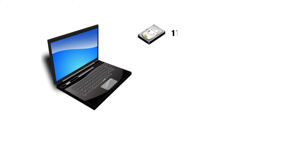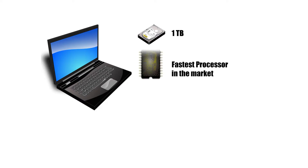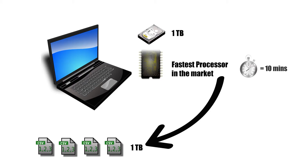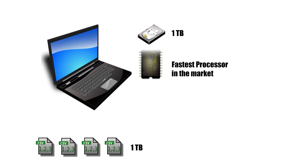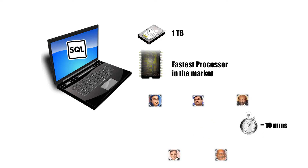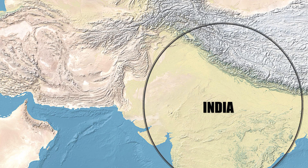To get this detail out of the data, we have a laptop with one terabyte of hard disk and the fastest processor available in the market. This fastest processor has a record that it can process one terabyte in 10 minutes — no more than one terabyte in 10 minutes. Since our data is one terabyte, we load it into the laptop's hard drive, run a SQL query, and after 10 minutes we get the top five richest Indians.